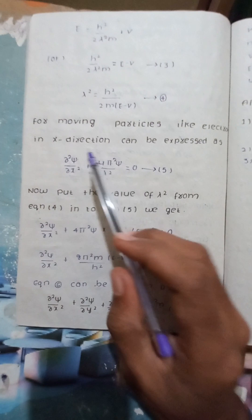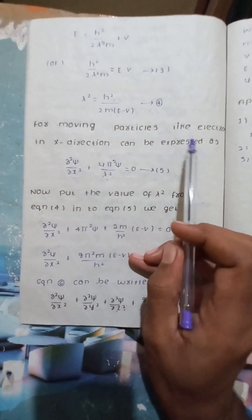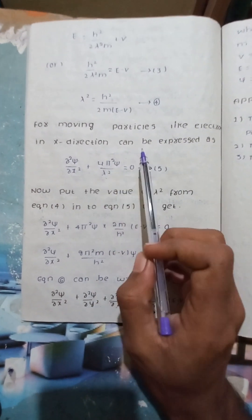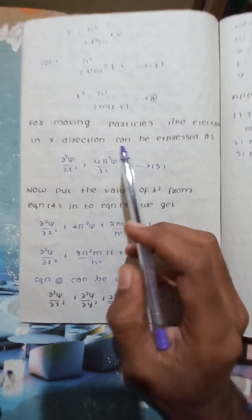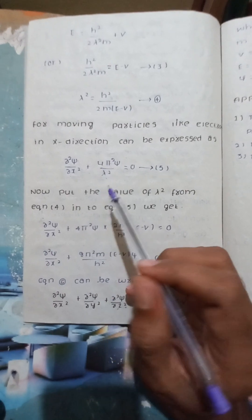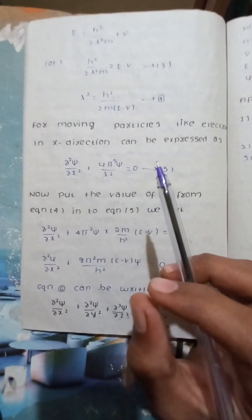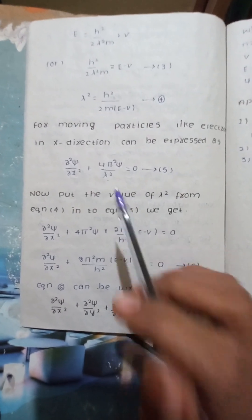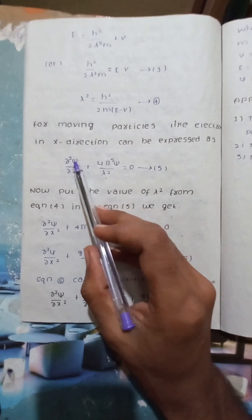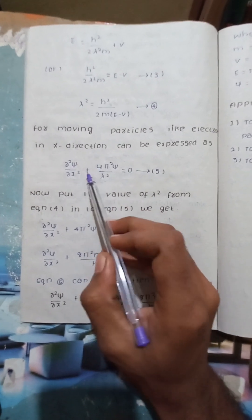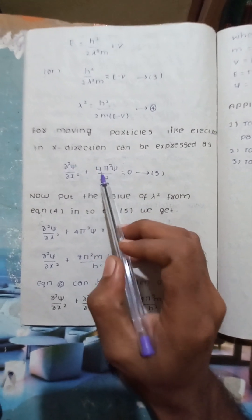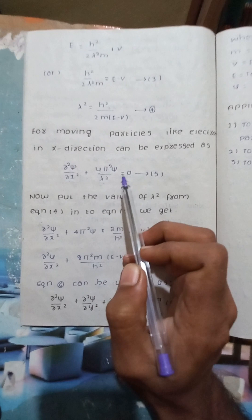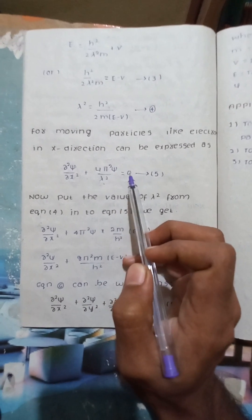For a moving particle like an electron in the x-direction, the wave equation can be expressed as: ∂²ψ/∂x² + (4π²ψ/λ²) = 0.